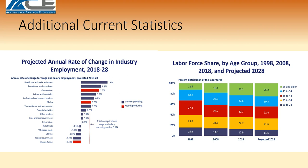Finally, the labor force share by age group shows the change in workforce age from 1998 projected through 2028. Basically, the amount of people aged 55 and older continues to increase in the workforce. For example, approximately 12% of the workforce was 55 or older in 1998, and that will have doubled to 25.2% by 2028, whereas other age groups are remaining stable or decreasing, as in the 16-to-24-year-old category.